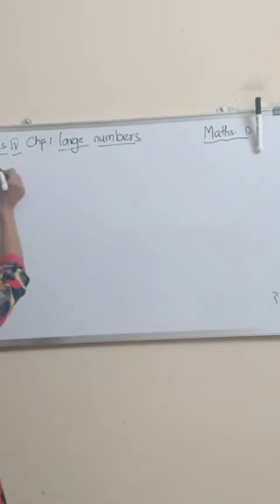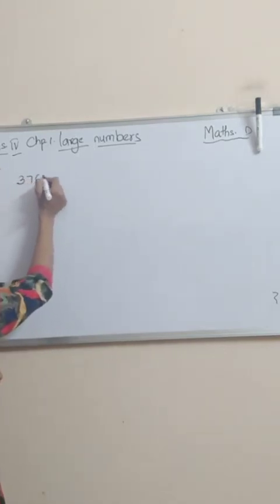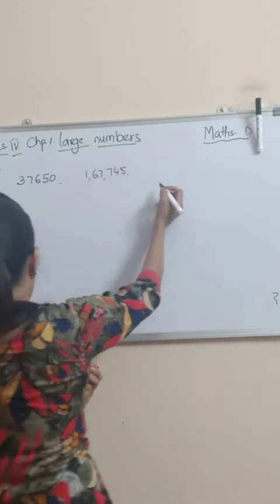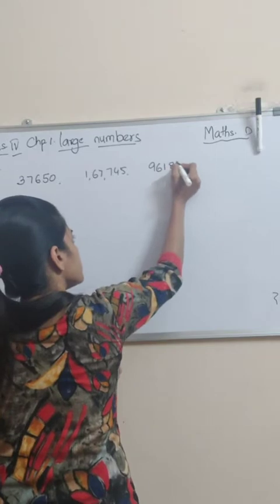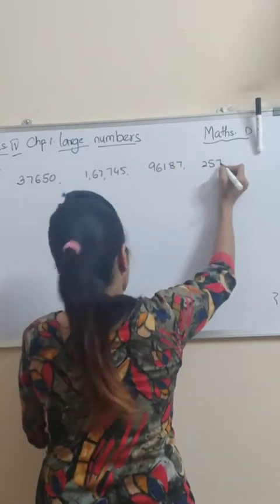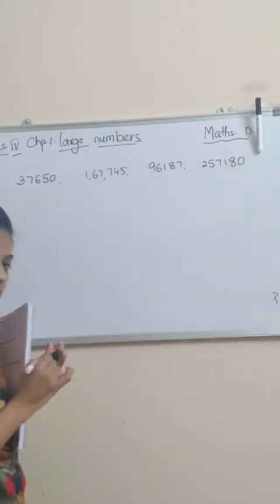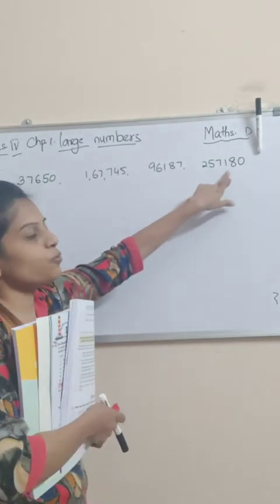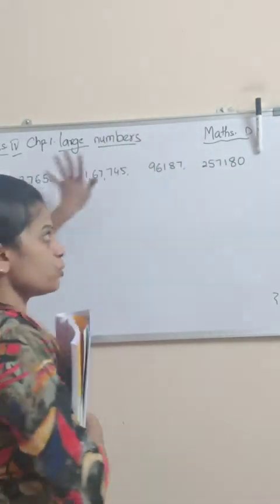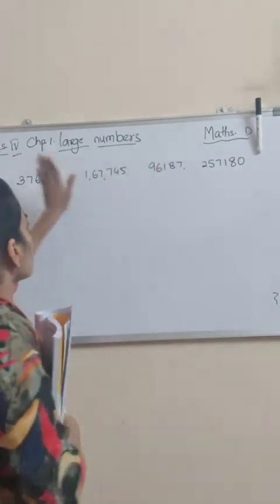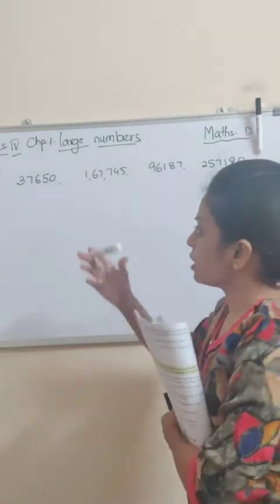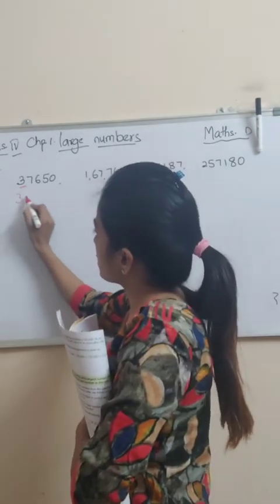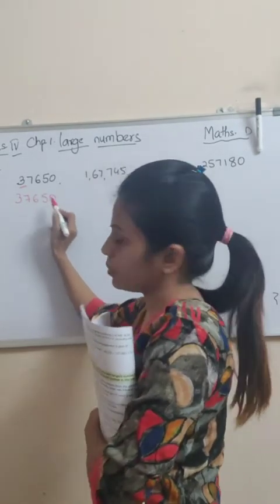Now, bit B first one: 37650, 167, 745, 96187, 257, 180. Students, count the digits: 1,2,3,4,5 — five digits; 1,2,3,4,5,6 — six digits; 1,2,3,4,5 — five digits; 1,2,3,4,5,6 — six digits. So these two are 6-digit and these two are 5-digit. Pehle hum chhote waale lehenge — 5-digit numbers. Now both 5-digit numbers: see the first number — here is 3, here is 9. Which is the smallest? 3 waala. So first we will write 37650.